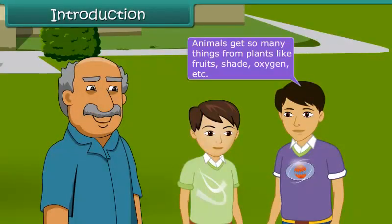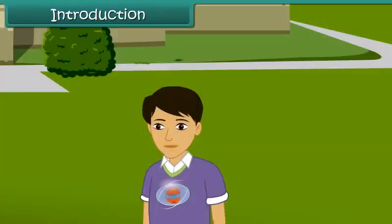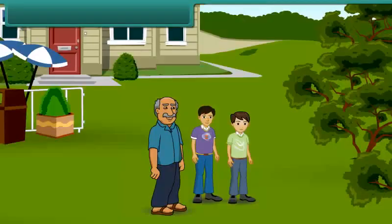Even the bird is enjoying ripe guavas. Yes, you know that animals get so many things from plants like fruits, shade, oxygen, etc. But do you know that animals also give many essential things to plants? Really? Uncle, please tell us more about it. Okay, let's know more about the interdependence of living things.